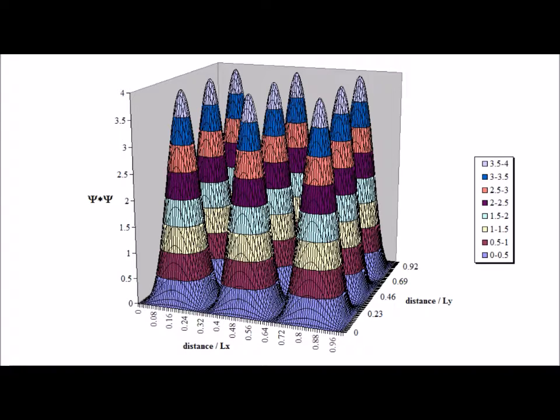Here is the probability density psi star psi for the case where n sub x is equal to 3 and n sub y is equal to 3.